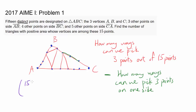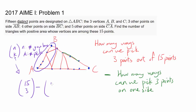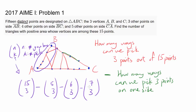The total number of ways to pick three points out of 15 is 15 choose 3. Then we subtract: on side AB we have 5 points, so subtract 5 choose 3; on side BC we have 6 points, so subtract 6 choose 3; and on side AC we have 7 points, so subtract 7 choose 3.